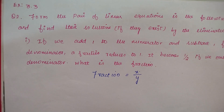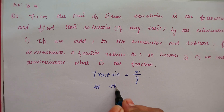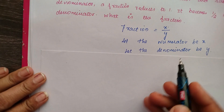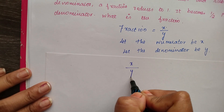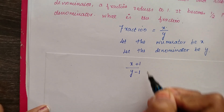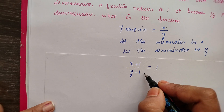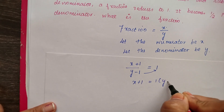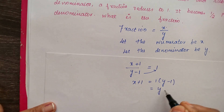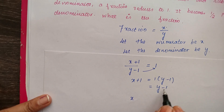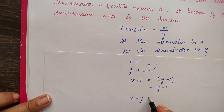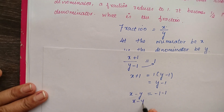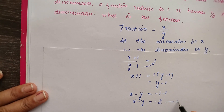Let the numerator be x and the denominator be y. So, numerator add 1 and denominator subtract 1. That gives the value 1. Simplifying: (x+1)/(y-1) = 1, so y minus 1 on the right hand side gives x minus y equal to minus 2. This is equation number 1.